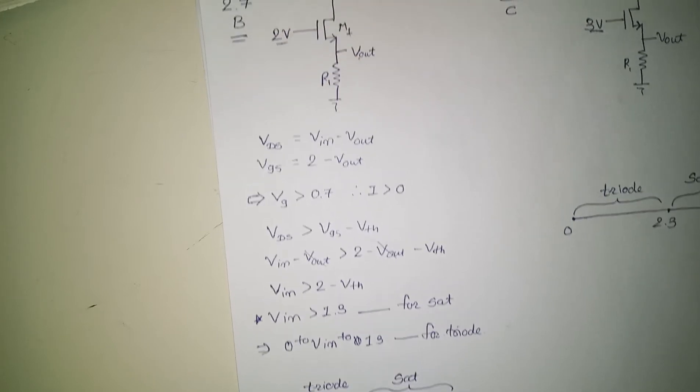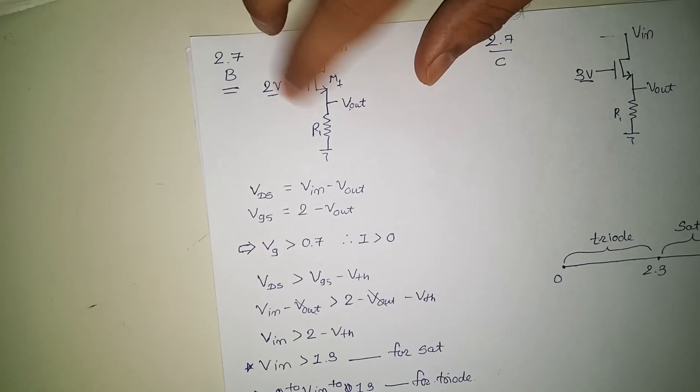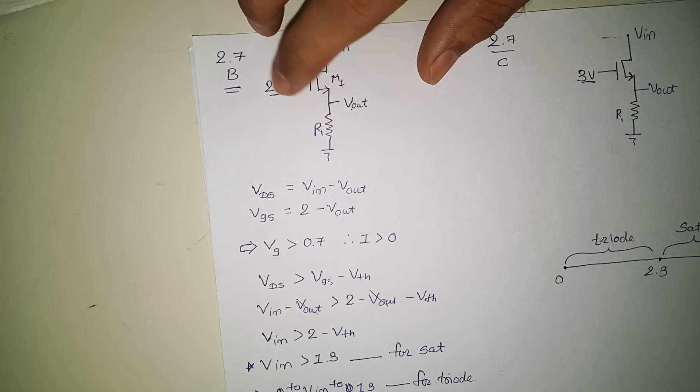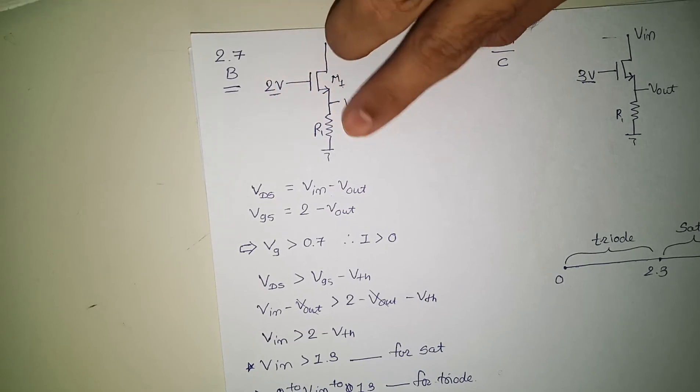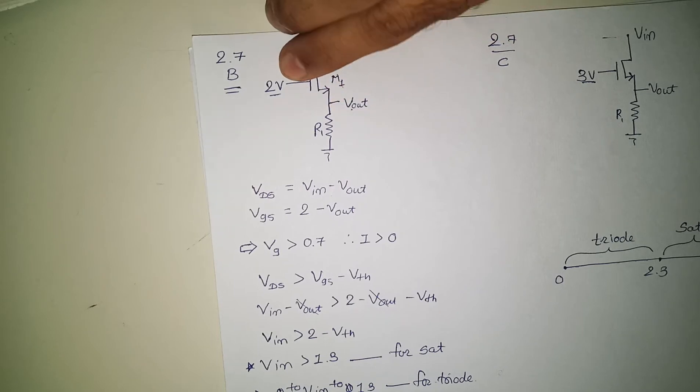If enough voltage is here, let's say 0 volts, current will be 0, ultimately drop will be 0. So as soon as this point is more than 0.7, that is the threshold voltage...